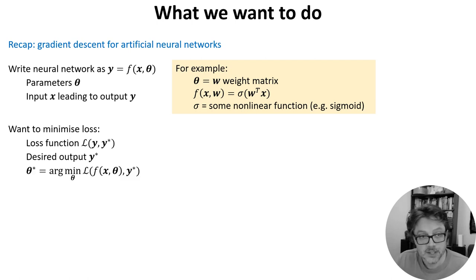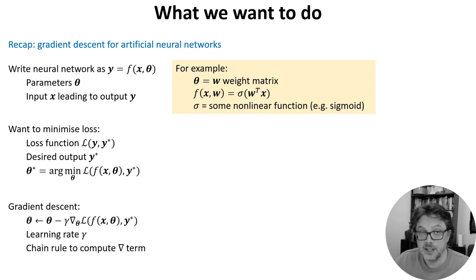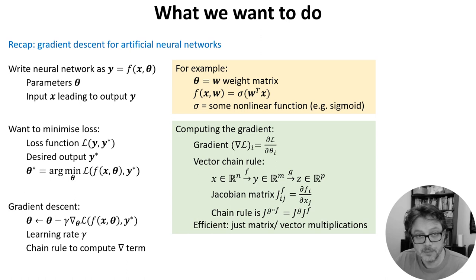We want to minimize some loss function that tells us how far the output of the network is from the desired output. To do that we apply gradient descent, moving in the reverse direction of the gradient of the loss function with respect to the parameters. We can compute the gradient efficiently using vector and matrix multiplies using the vector chain rule.